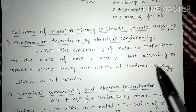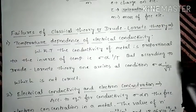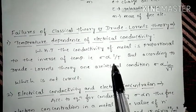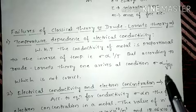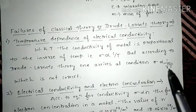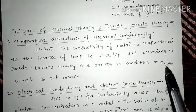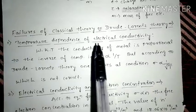But according to Drude-Lorentz theory, one arrives at a condition that σ is inversely proportional to √T. This is experimental fact, but this is theoretical, which is not correct. And that is the reason the classical theory has failed.